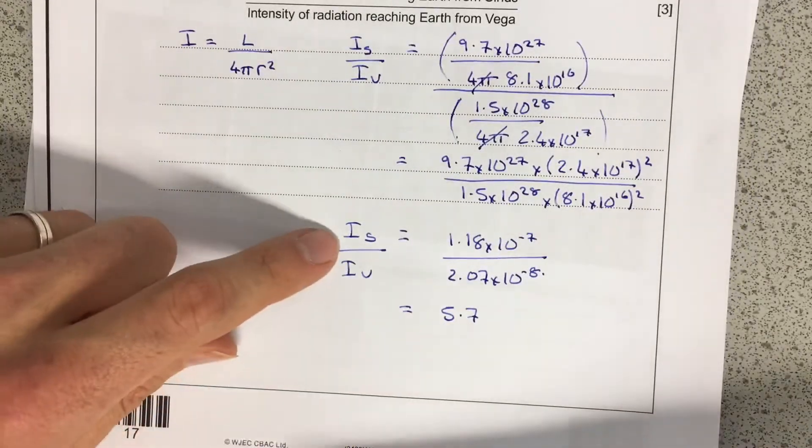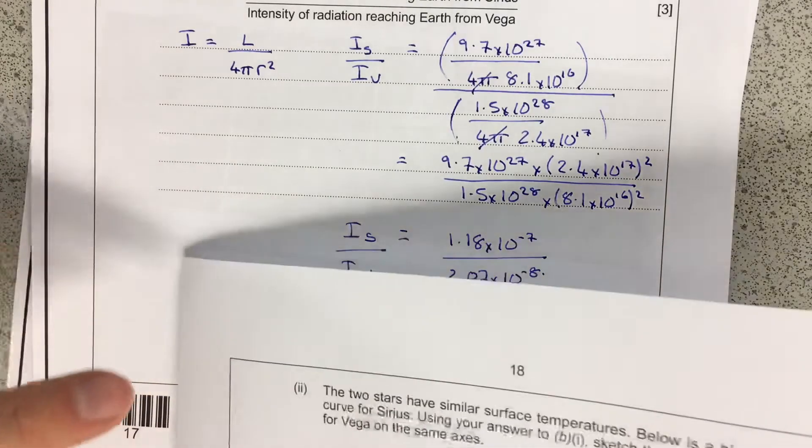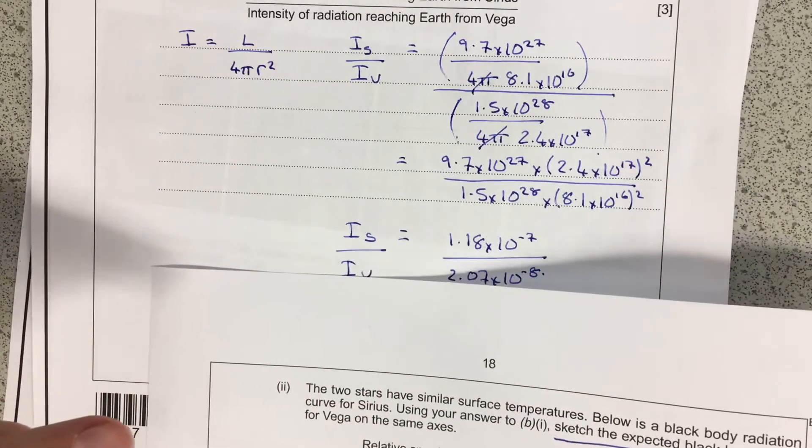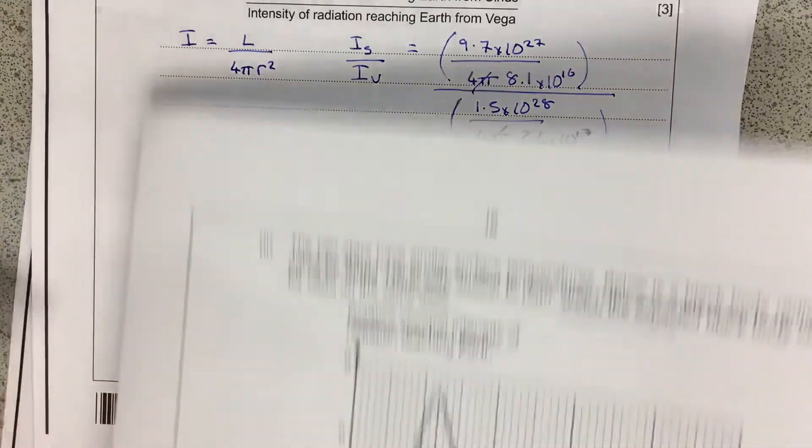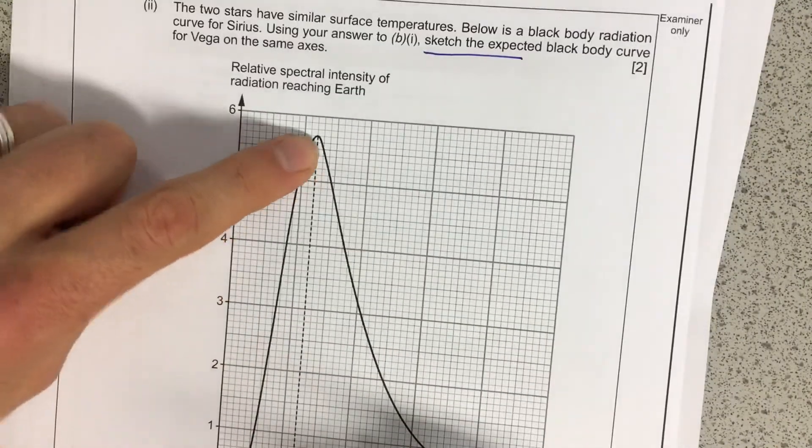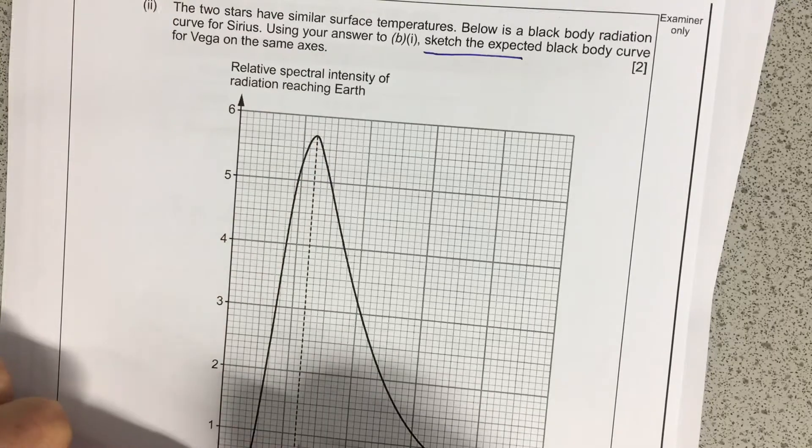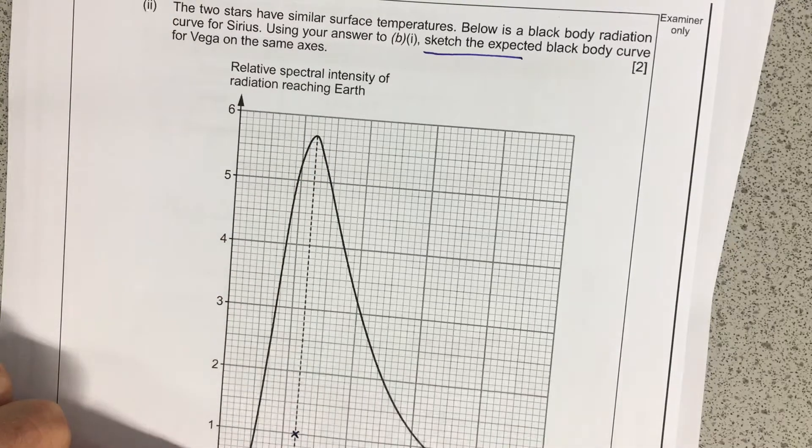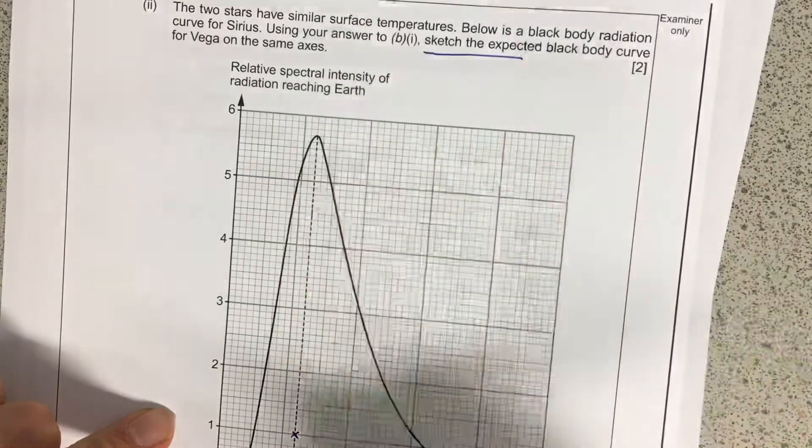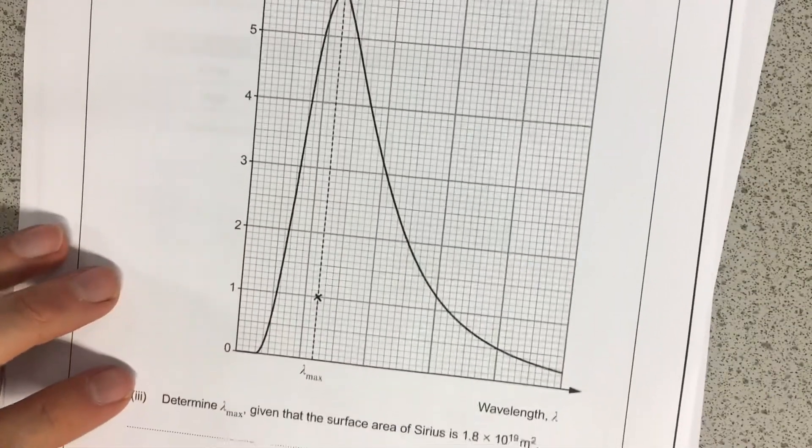So we've just worked out that Vega is 5.7 times less than Sirius. So there's no coincidence, I'm sure, that when they drew this, they wrote the relative intensity here is 5.7. So for our new curve that we're drawing on here for Vega, it's got to go through there. So they've told us that they're the same surface temperature, so their peak wavelength will be the same.